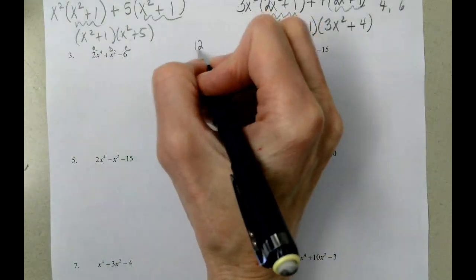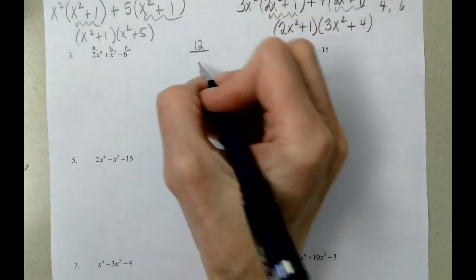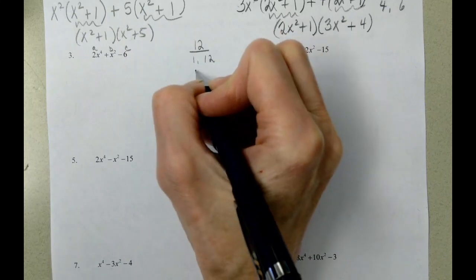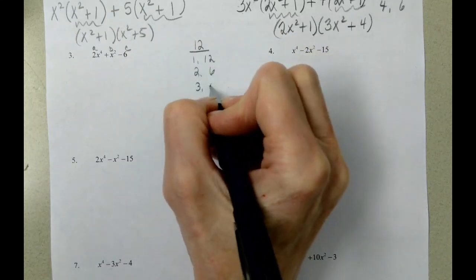2 times 6 is 12. And the factors of 12 are 1 times 12, 2 times 6, and 3 times 4.